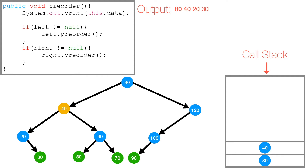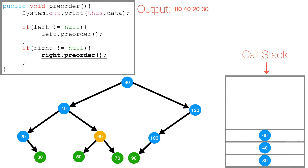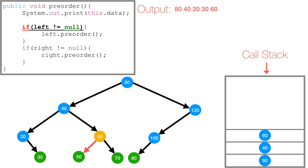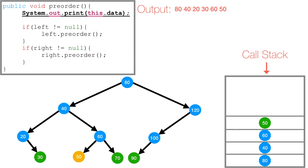Now we're back at 40. We've explored 40's left subtree containing 20 and 30, but we haven't visited 40's right subtree. So we check if 40's right is not null — it's not — so we call preorder on 40's right subtree. 60 gets pushed to the call stack, and we print 60. Then we check if 60's left is not null, and we call preorder on 60's left subtree. So 50 is pushed to the call stack, and we print 50. Then 50's left and right are both null, so 50 gets popped off the call stack and we're back at 60.